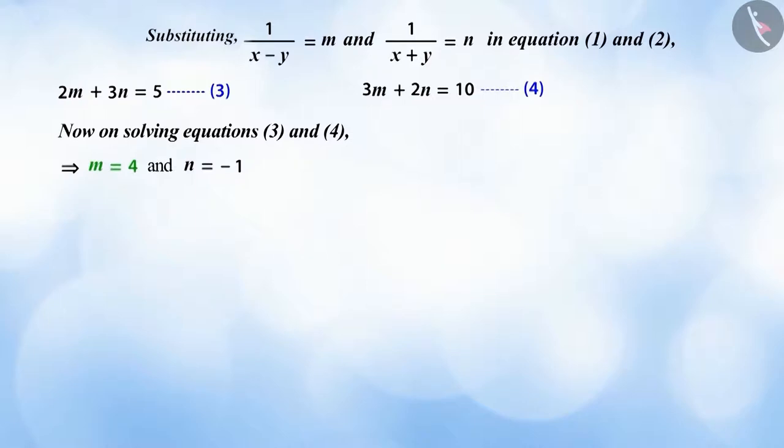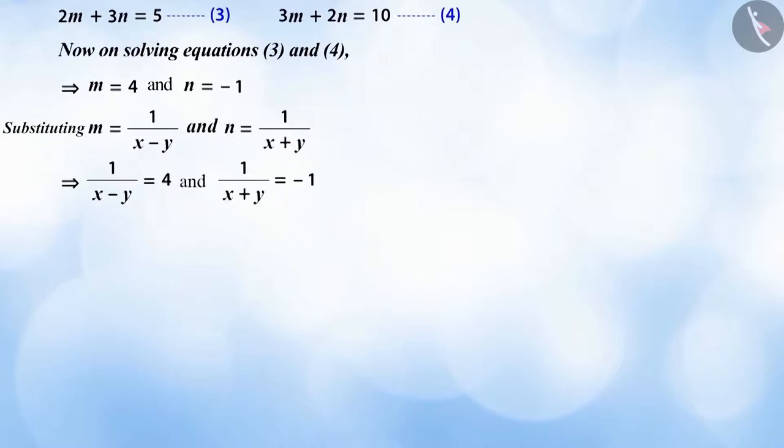On solving the equations, we get m is equal to 4 and n is equal to minus 1. We replace m by 1 by x minus y and n by 1 by x plus y. On solving further, we get equations 5 and 6.